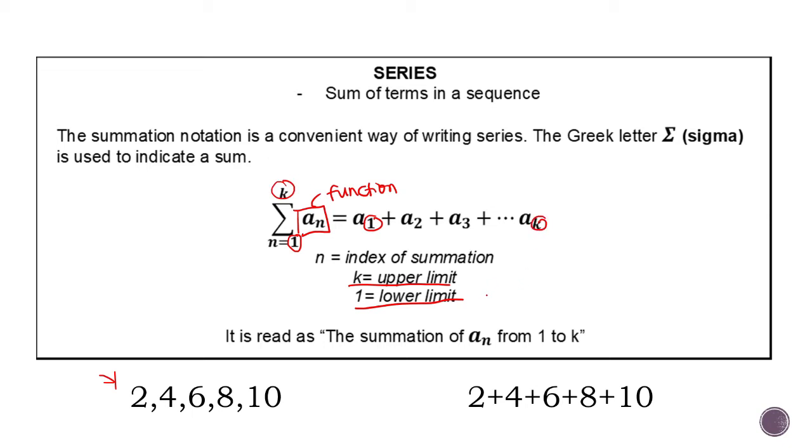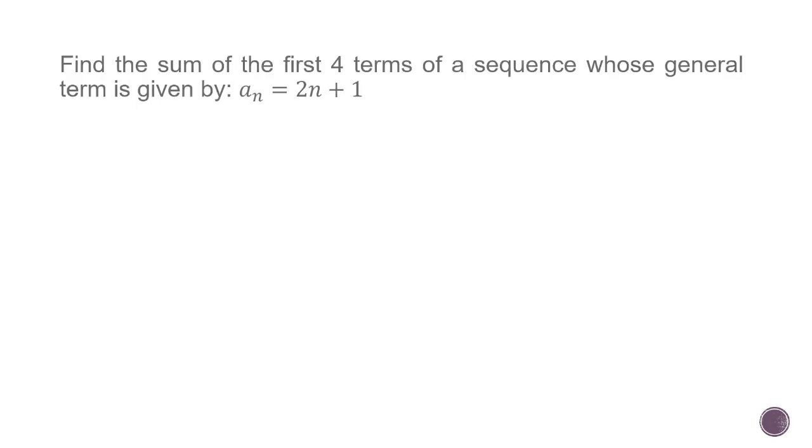So let's see. Tingnan natin kung paano to. Find the sum of the first four terms of a sequence whose general term is given by a sub n is equal to 2n plus 1. So the problem is asking us to add the first four terms of the sequence given this formula.